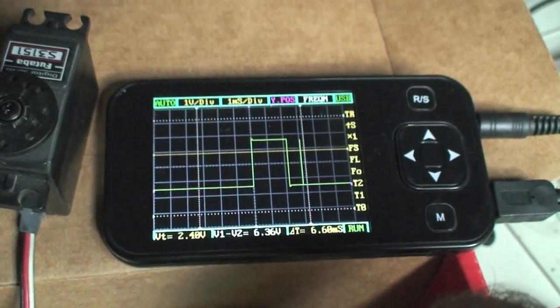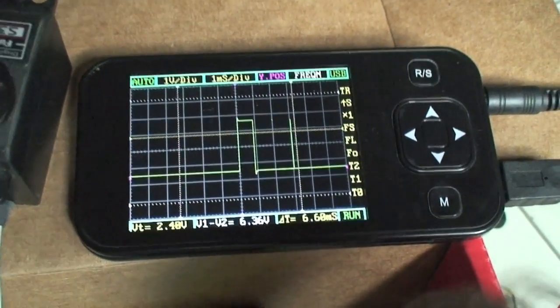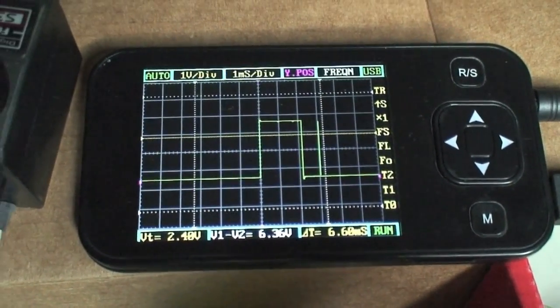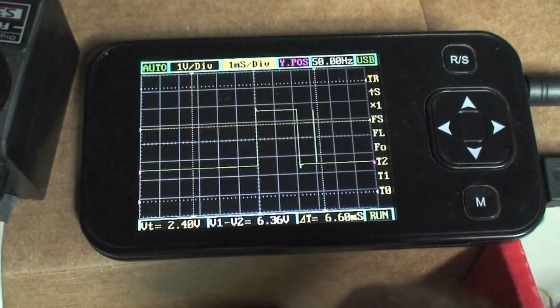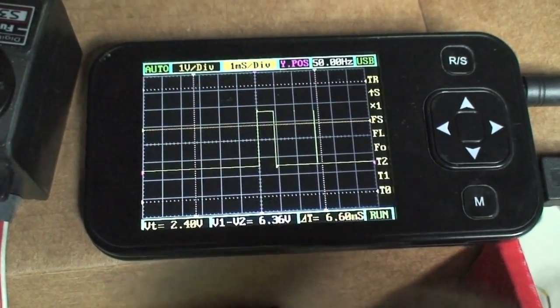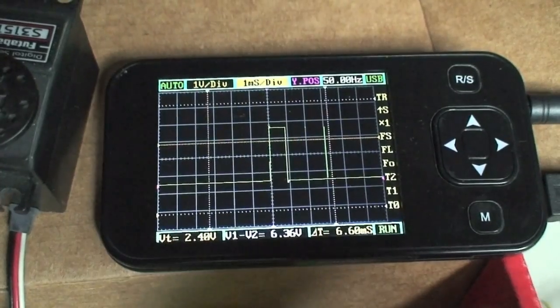This is on the oscilloscope. You can see the wavelength is shrinking and rising. So that's the pulse that's controlling the servo.